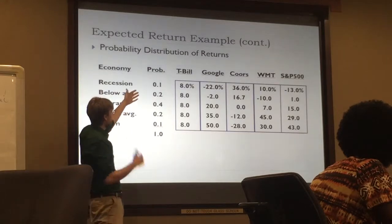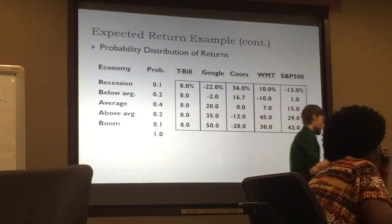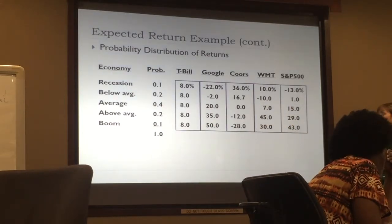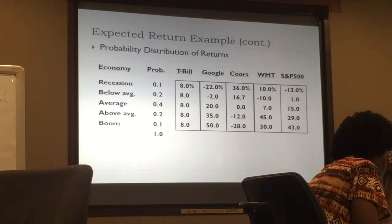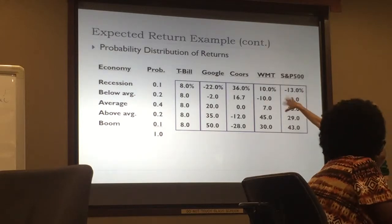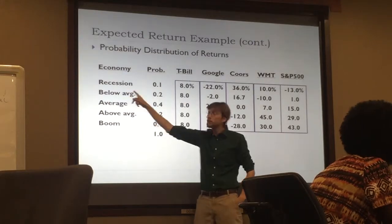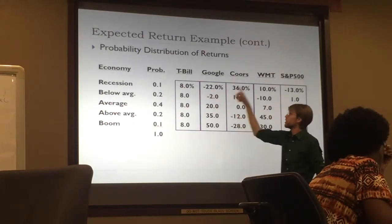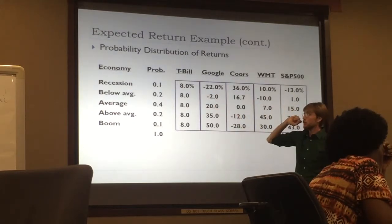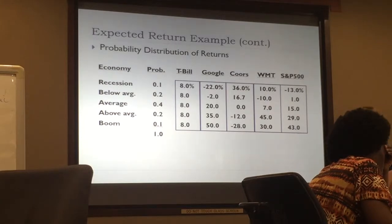On the right-hand side we have our conditional returns — conditional on us experiencing a particular state, these are the returns of each of our assets. If we end up in a recession, these are the returns the assets will deliver; if we end up in a boom, these are the returns. We've made the T-bill risk-free by definition — no matter what happens, it delivers a constant return of 2%.